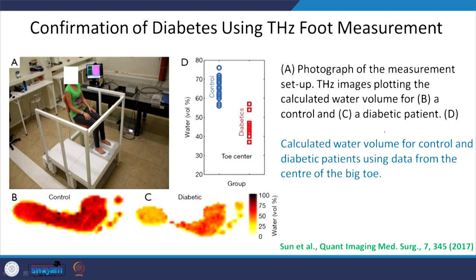Confirmation of diabetes using terahertz foot measurement: a patient sits with terahertz sensors beneath her foot for terahertz imaging. Based on the water content level, you can see the difference between a normal foot and a diabetic foot clearly in the image. Based on this imaging technique, not only can you say whether a person is diabetic or not, but you can also determine the blood glucose concentration — so it is both qualitative and quantitative.